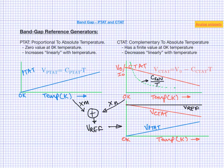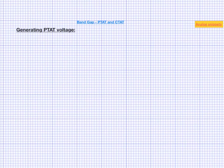So now let us see how we can generate these voltages. Let us begin with PTAT voltage because it is simpler to understand. Consider a typical exponential voltage-current relationship equation.